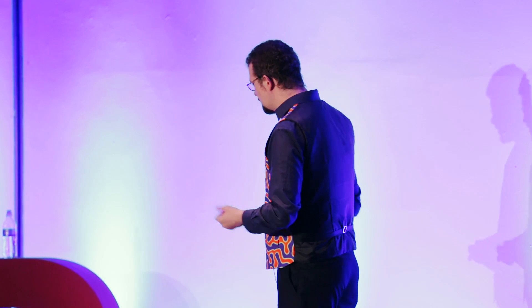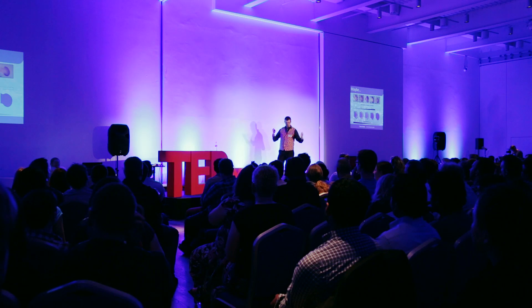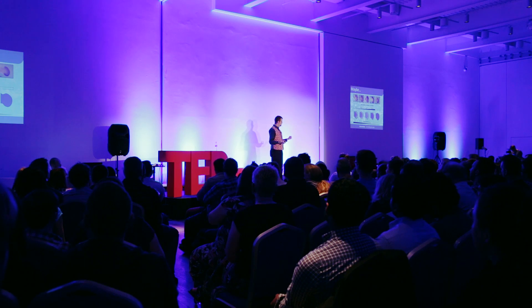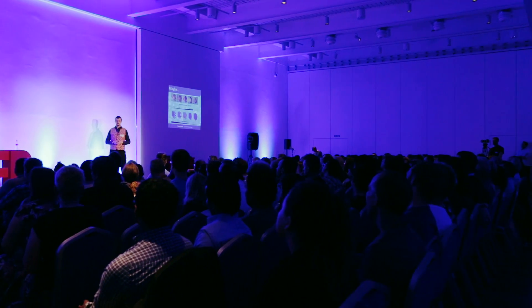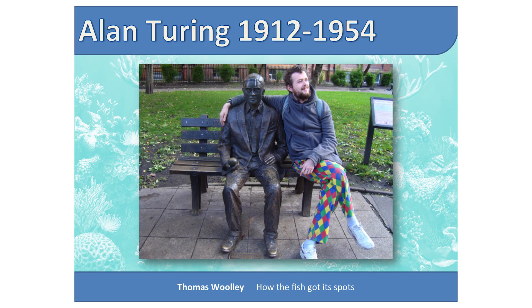There are still open questions, which hopefully you'll go away and answer. How did the fish get its spots? How did the zebra get its stripes? How did the giraffe get its mosaic pattern? We don't know — I'm as surprised as you are. But maybe, just maybe, we can get some sense of what is happening through the ideas of Alan Matheson Turing. Thank you very much.